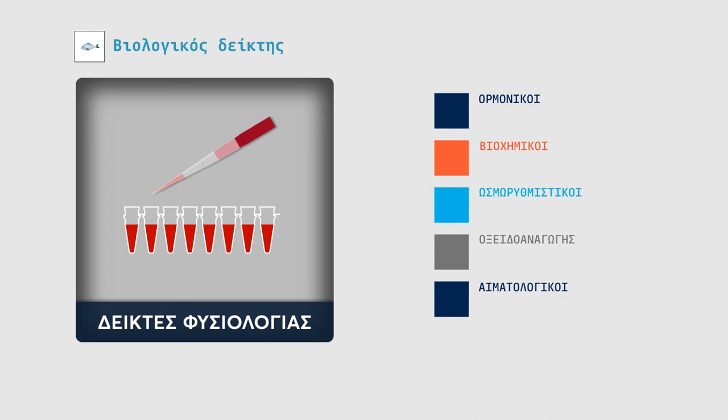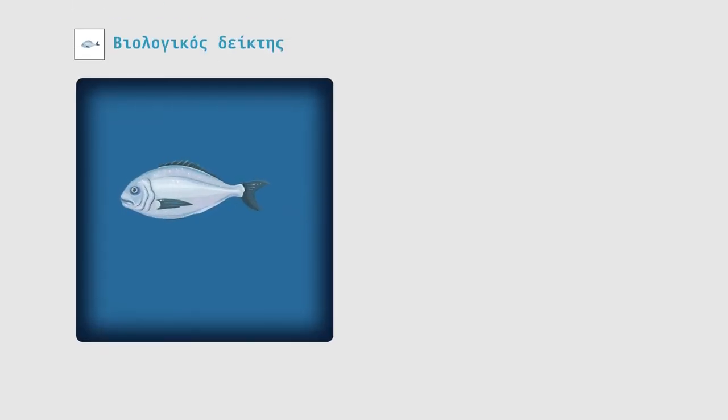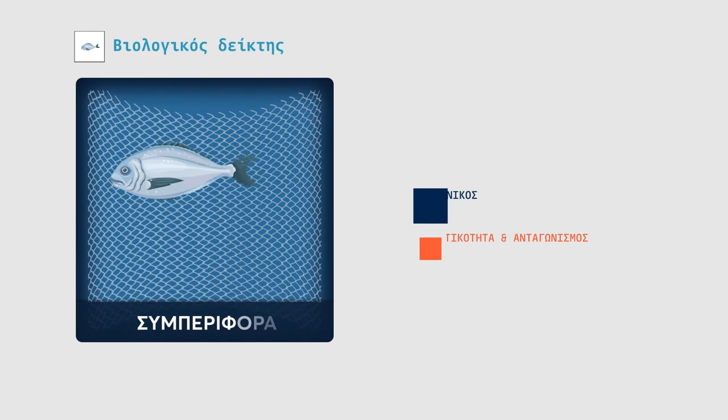There are a series of physiological indicators linked to fish welfare. These mainly include hormonal, biochemical, osmotic balance, oxidation and hematological indicators.